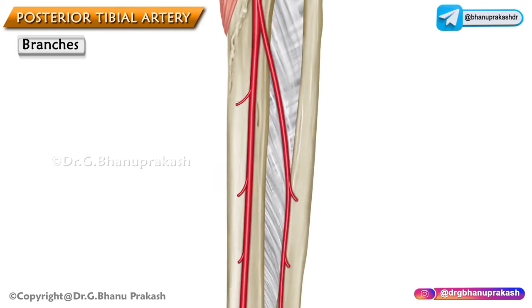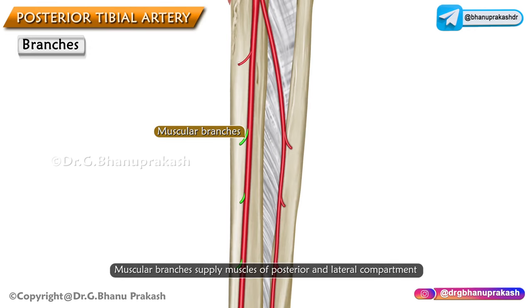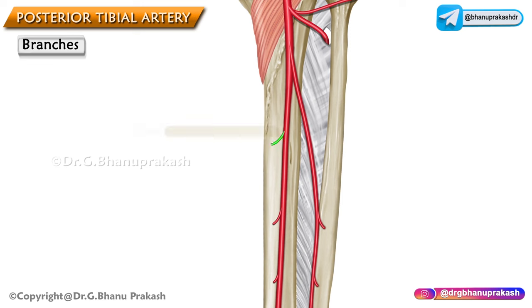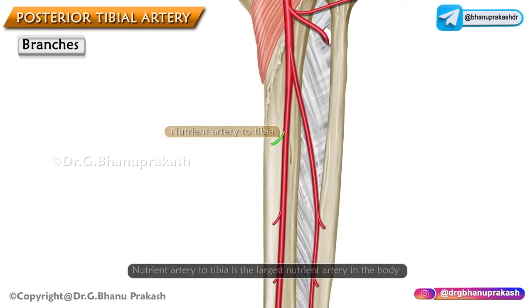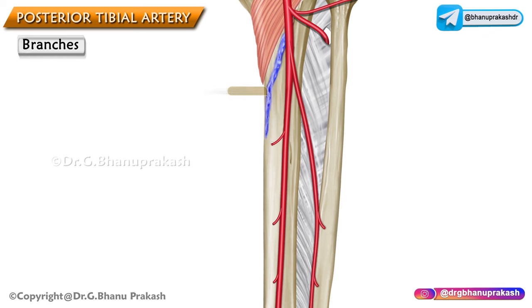Next are the muscular branches, given off to the muscles of the posterior compartment as well as to the muscles of the lateral compartment of the leg. Next is the nutrient artery to the tibia — remember that it is the largest nutrient artery in the body, and it enters the nutrient foramen of the tibia below the soleal line.